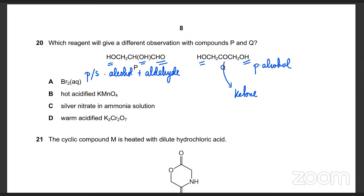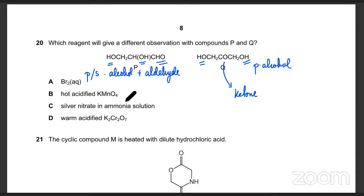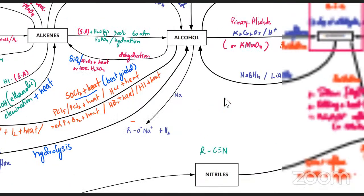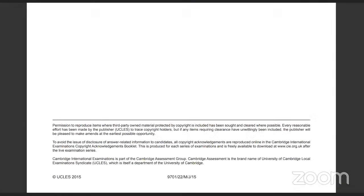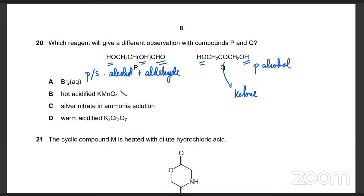Which agent will give you a different observation? First thing: warm with K2Cr2O7. Remember, both aldehydes and alcohols — when you warm them with K2Cr2O7 — they're going to get oxidized to carboxylic acid. So K2Cr2O7 is going to give you the same result with alcohols as well as aldehydes.